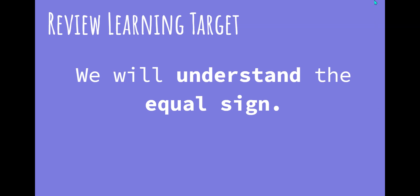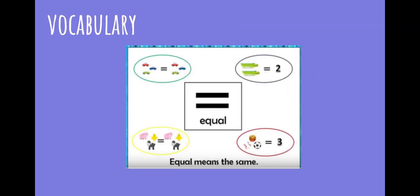Let's get started by reviewing some vocabulary. Remember, the equal sign looks like this. And it means that both sides, or each group on both sides, is the same amount or has the same value.